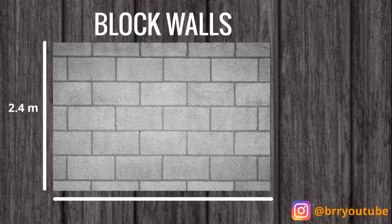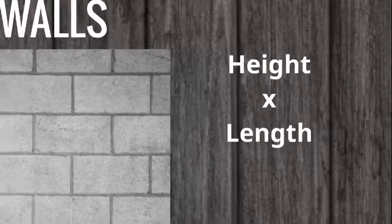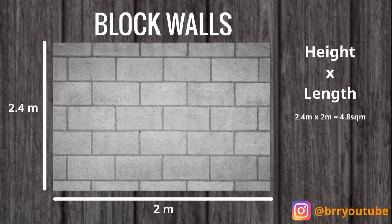We're going to start with a block wall, and my example is going to use a 2.4 meter high wall, which is quite a standard height in the UK. We're going to assume the wall is two meters wide. The first thing we need to calculate is the square meterage of the wall, using height multiplied by length — so 2.4 meters multiplied by 2 meters, which gives us 4.8 square meters.